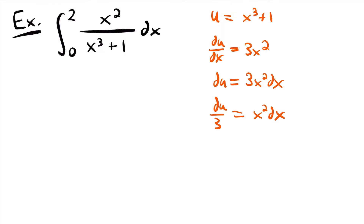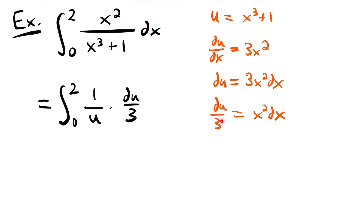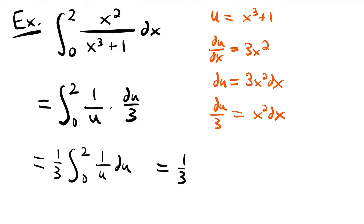Replacing in the integral, we have the integral from 0 to 2 of 1 divided by u times du divided by 3. Pulling the 1/3 to the outside, this equals 1/3 times the integral from 0 to 2 of 1 divided by u du, which we recognize as a function we can integrate using the log rule for integration. This equals 1/3 times the natural log of the absolute value of u evaluated from 0 to 2.